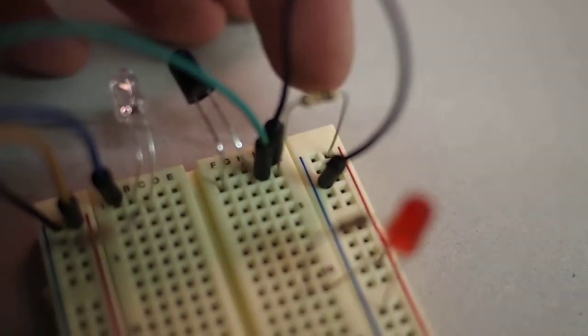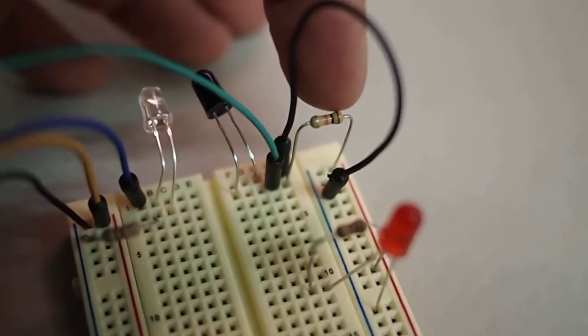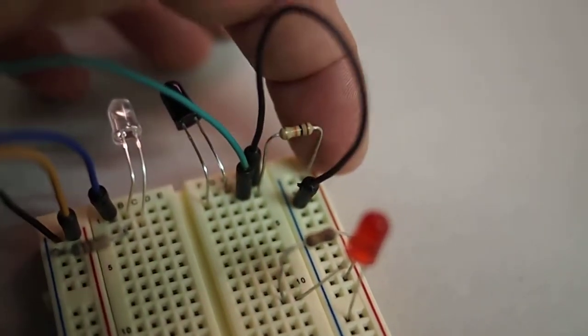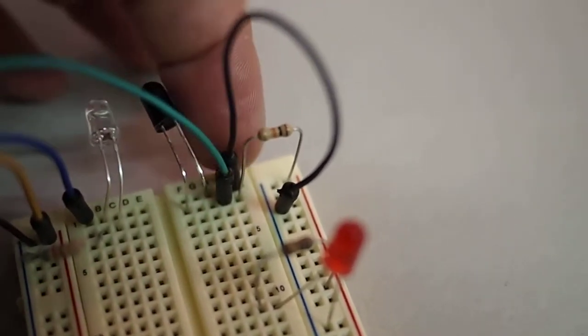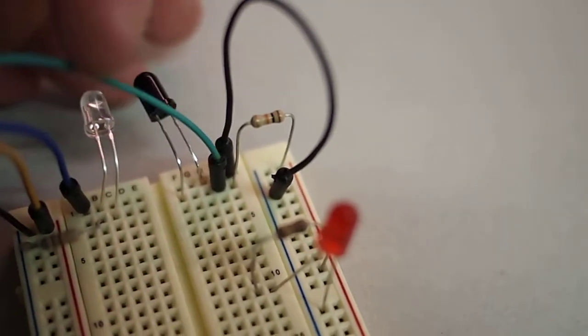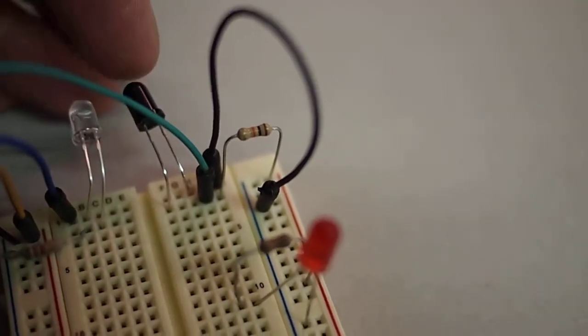The other side of it, if I get my camera in focus. The other side of it is this guy here, which is a 10K resistor. And the 10K resistor is going to power. So you have power to the long leg, and the other side of the long leg goes to our microcontroller.